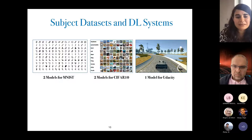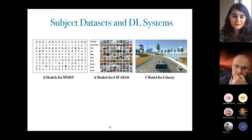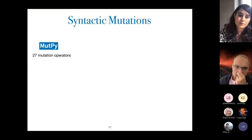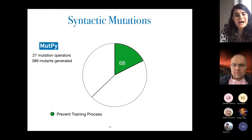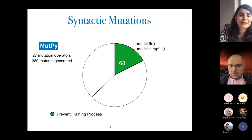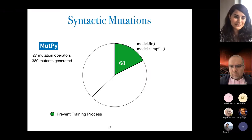We picked five different deep learning systems: two models for the MNIST dataset, two for CIFAR-10, and one model for a velocity self-driving car where the aim is to predict the steering angle from a road image and keep the car in the center of the lane. We used MutePy, a mutation testing tool for Python with 27 mutation operators, which generated 389 mutants overall for our five subject systems. In qualitative analysis, we found that for 68 of them, the introduced change simply prevented the training process — for example, removing statements like model.fit or model.compile, so training would not even take place.